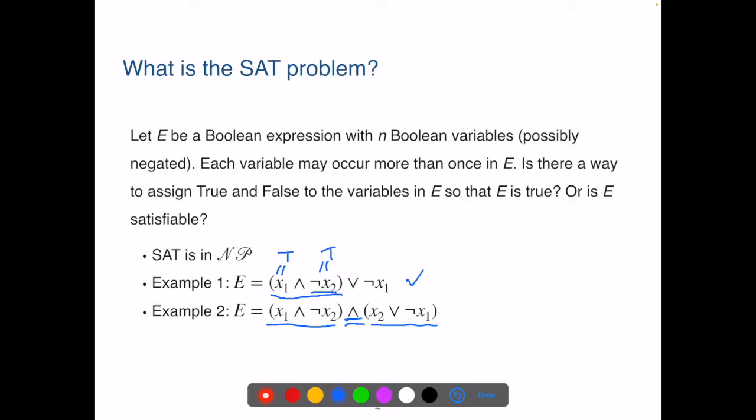For the first one to be True, we need to have X1 as True and NOT X2 as True as well. So X2 would be False.